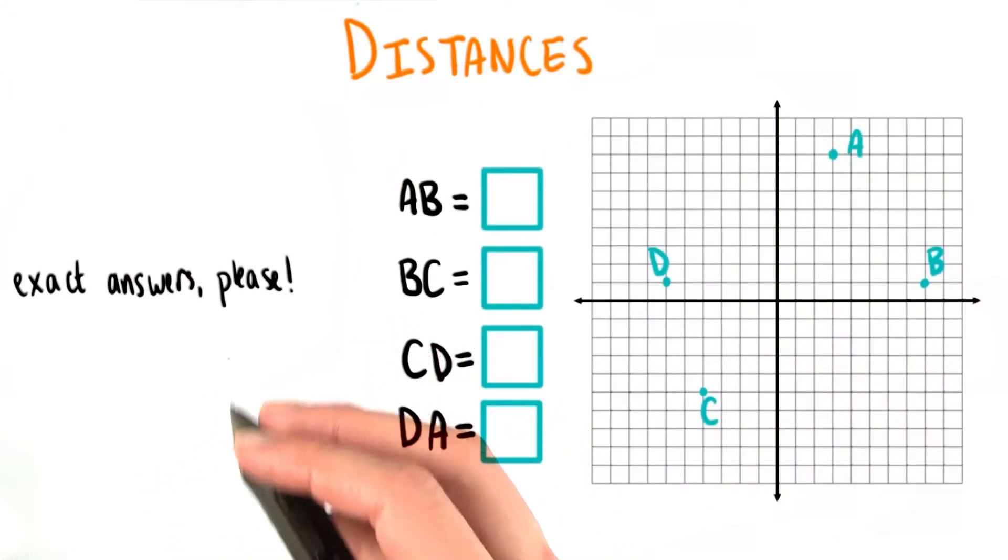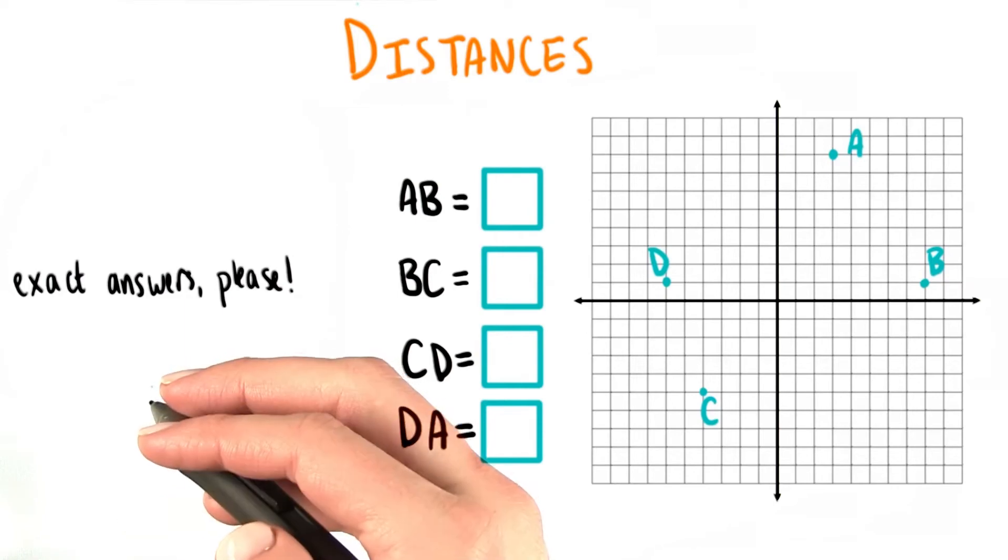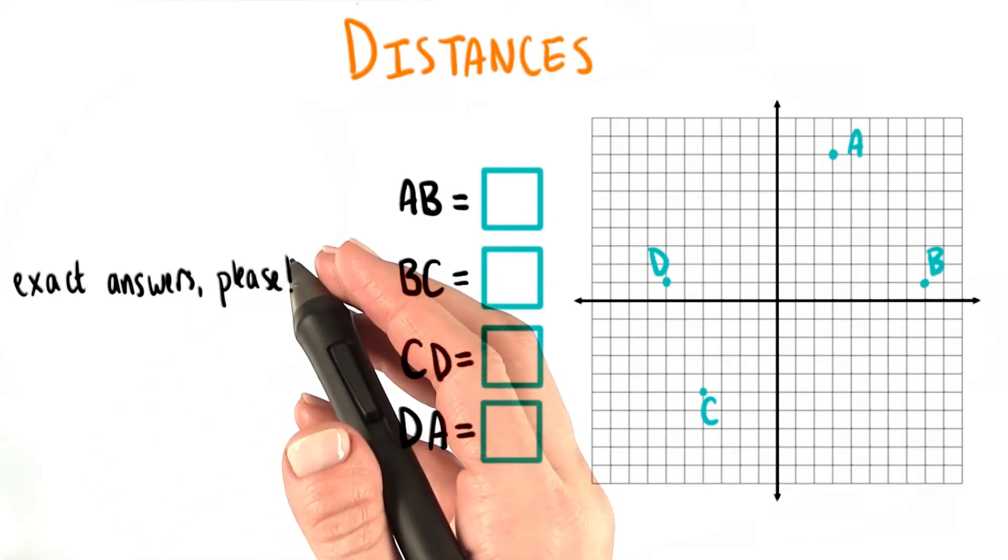Think about how you used triangles, right triangles in particular, to find the distance from Grant's hometown to the city Udacity.